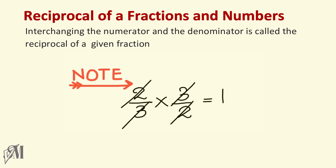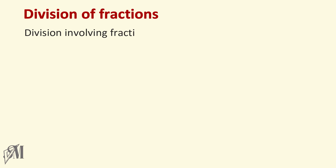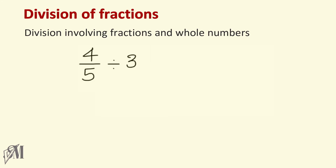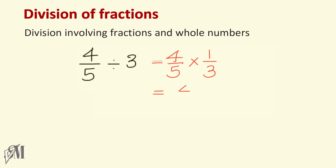Now let's see how to perform division of fractions. We'll first pay attention to divisions involving fractions and whole numbers. Four over five divided by three: the first step is to write the first fraction as it is — four over five — then instead of division write the multiplication sign, and instead of three write its reciprocal, one over three. Multiply: four times one is four, five times three is fifteen, so our answer is four over fifteen.